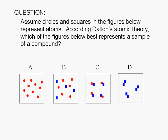Figures A and D represent samples that have only one kind of atom. Figure A only has red circles, while Figure D only has blue squares. Therefore, Figures A and D represent a sample of an element.